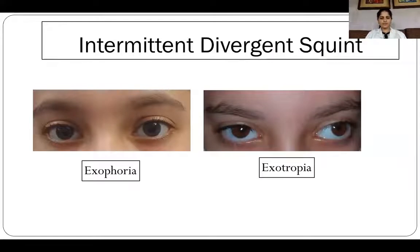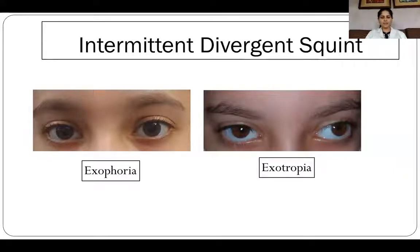Intermittent exotropia is the most common type of exotropia and is frequently encountered in clinical practice. It starts as a latent deviation, shifts to an intermittent exotropia and then becomes constant. Binocularity is present in the phoric phase but with progression one eye becomes suppressed.